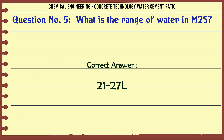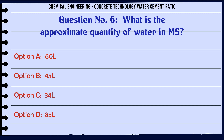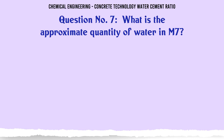What is the approximate quantity of water in M5? A. 60 L, B. 45 L, C. 34 L, D. 85 L. The correct answer is 60 L.